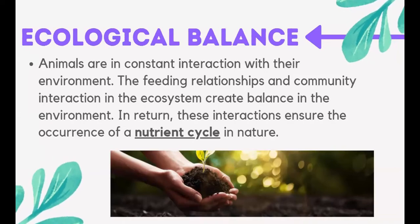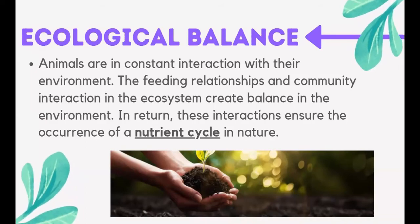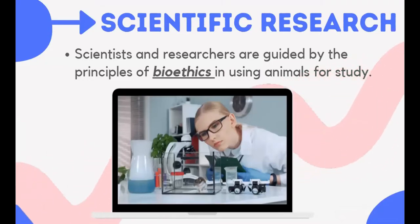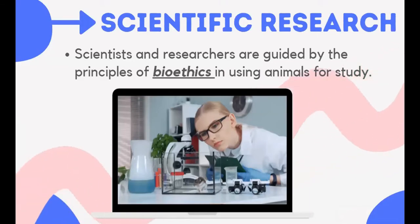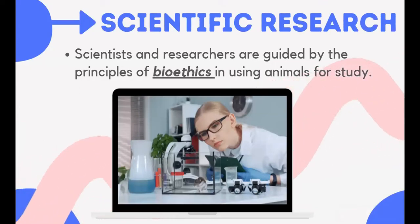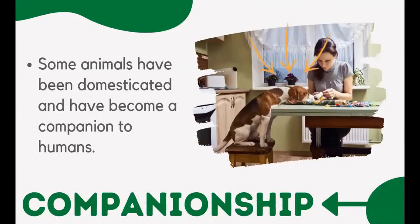Animals are in constant interaction with their environment, and these interactions ensure the occurrence of a nutrient cycle in nature. Researchers have used animals like mice and rats to better understand the mechanisms of human diseases and to develop new medicines and surgical procedures. Research enables people to build and improve knowledge in areas like anatomy, physiology, nutrition, and immunology. Some animals have been domesticated as companions — dogs and birds are pets for most people, providing relief from everyday stress, and some animals can be trained to assist people with disabilities.